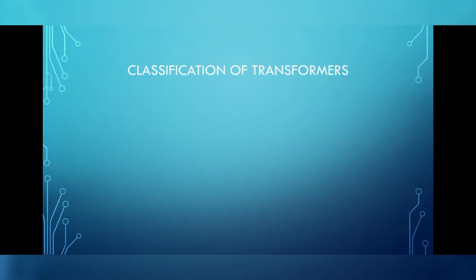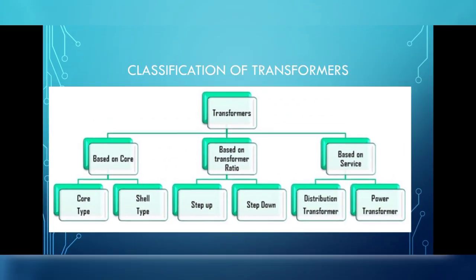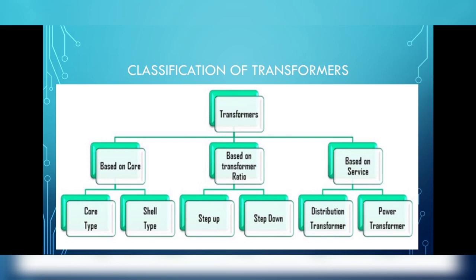Now let us see the classification of transformers. Transformers are basically classified into three types. The first one is based on core, which is further classified as core type and shell type. The second classification is based on transformer ratio, which is further classified as step-up transformer and step-down transformer. And third one is classified based on service, which is further classified into distribution transformer and power transformer.